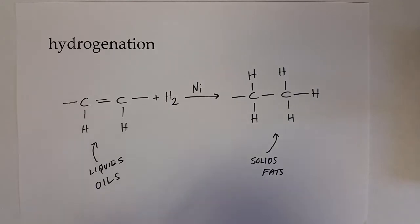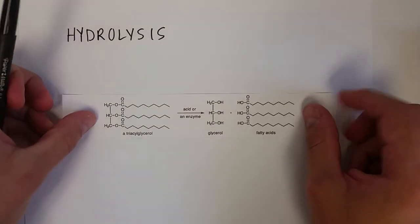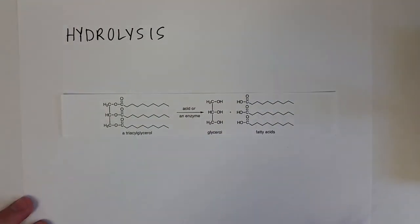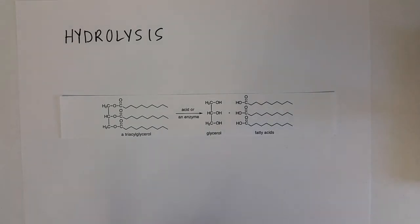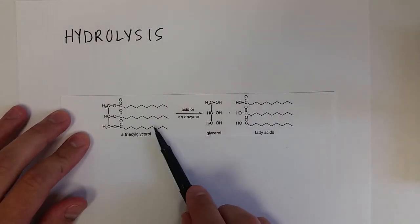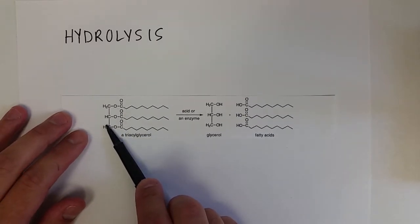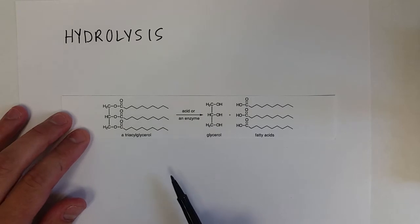So the next reaction we're talking about is hydrolysis, and this is basically the reverse reaction to what we were talking about in the production of a triacylglycerol, where we added a fatty acid to glycerol molecule through a condensation reaction through the removal of water. Now we're actually going to add the water back in to break it down from the glycerol molecule.